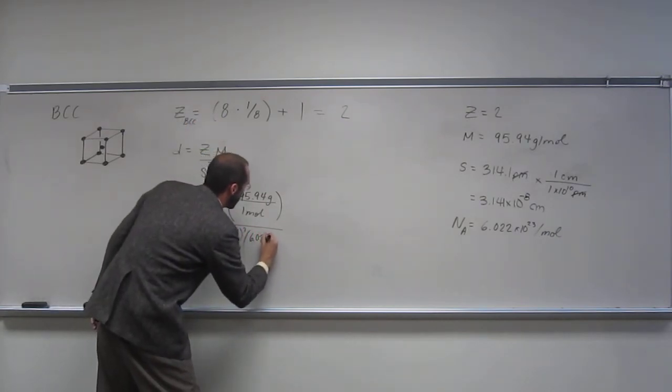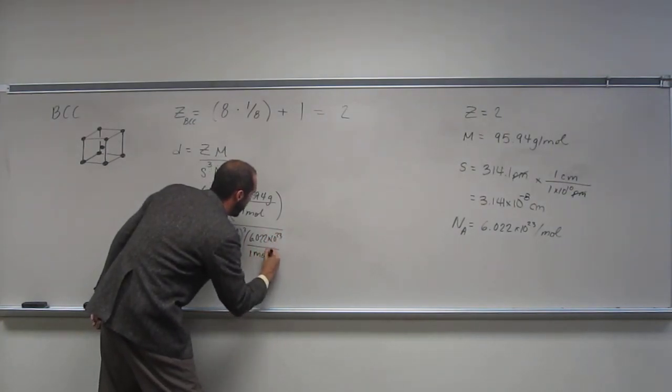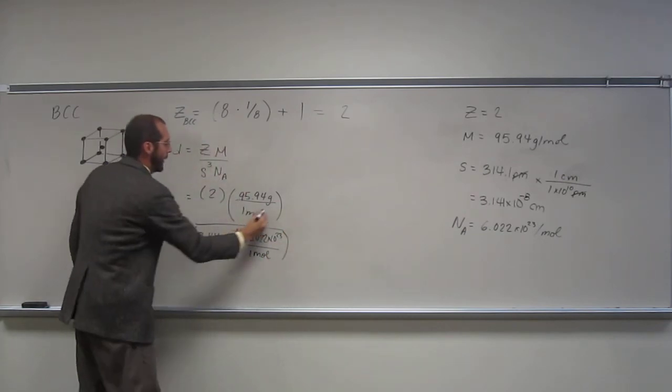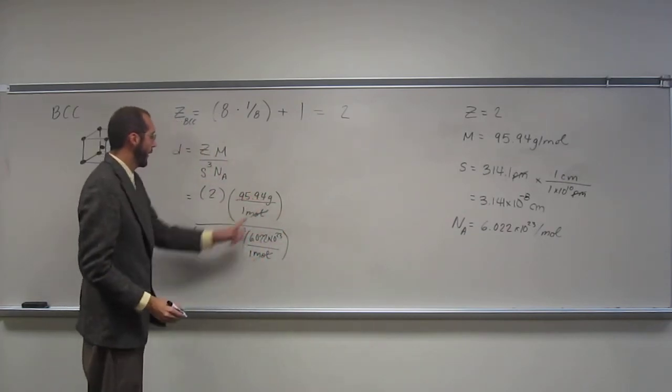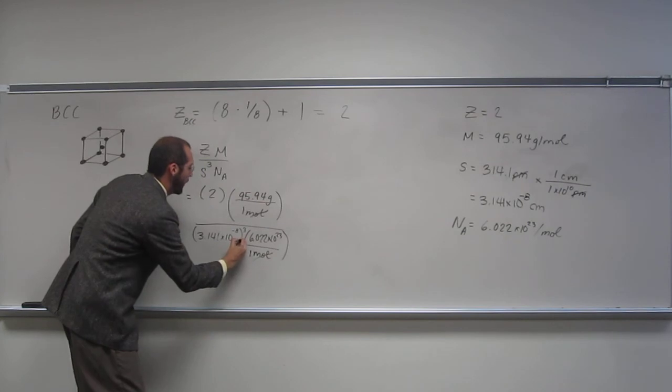times 10 to the negative 8 cubed, 6.022 times 10 to the 23rd, divided by 1 mole, like that. Cancel, cancel, cancel, cancel, grams per cubic centimeter.